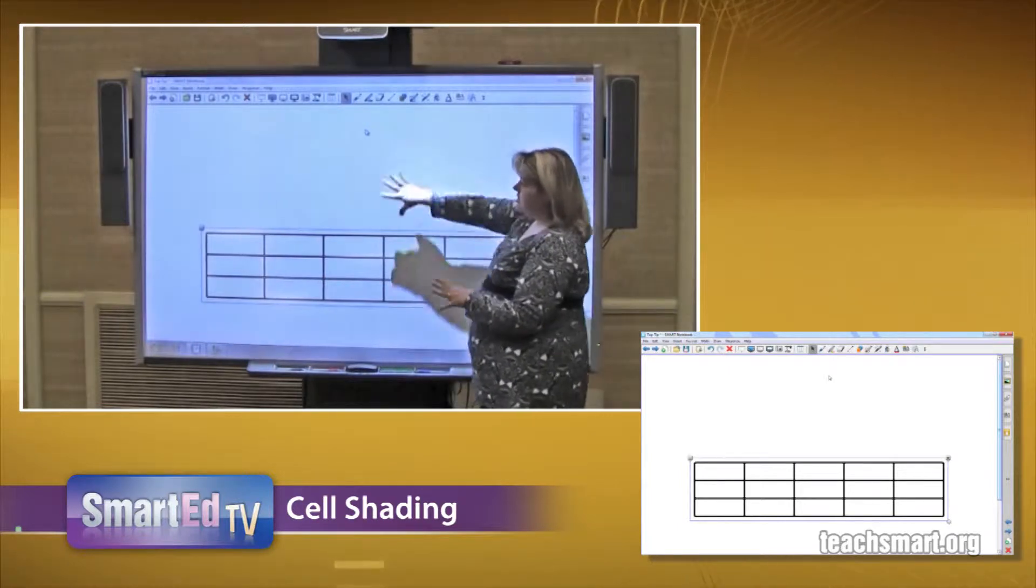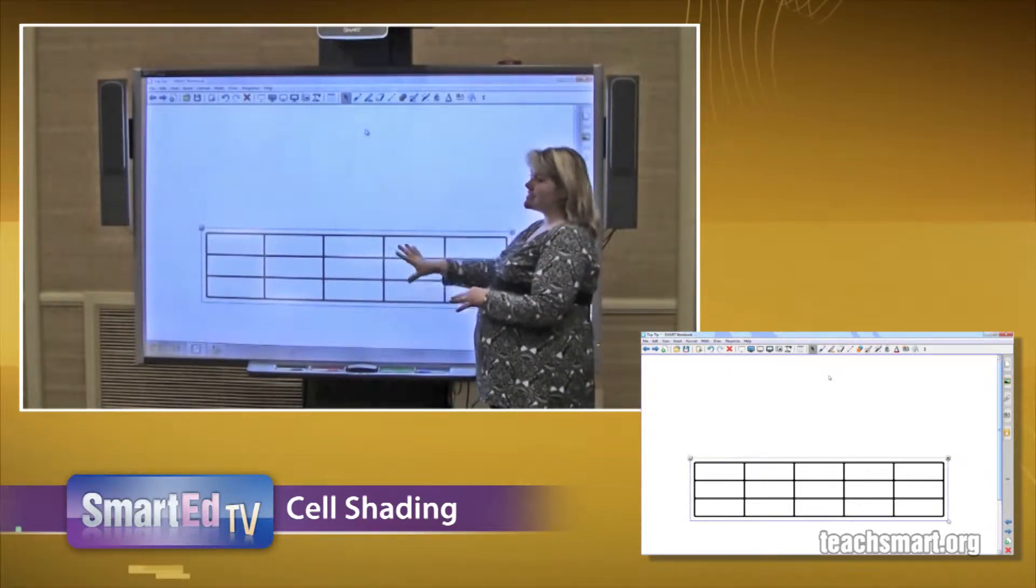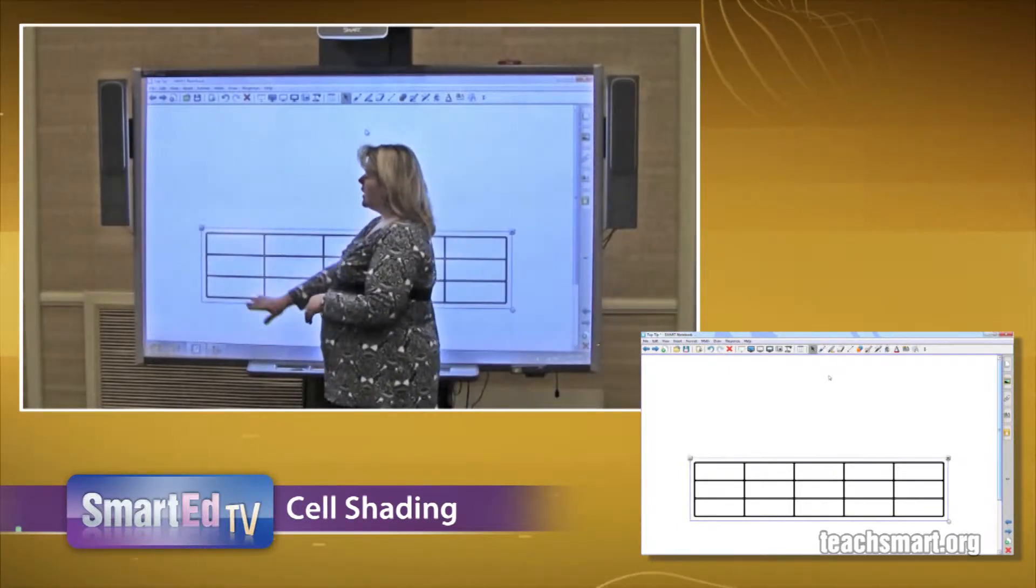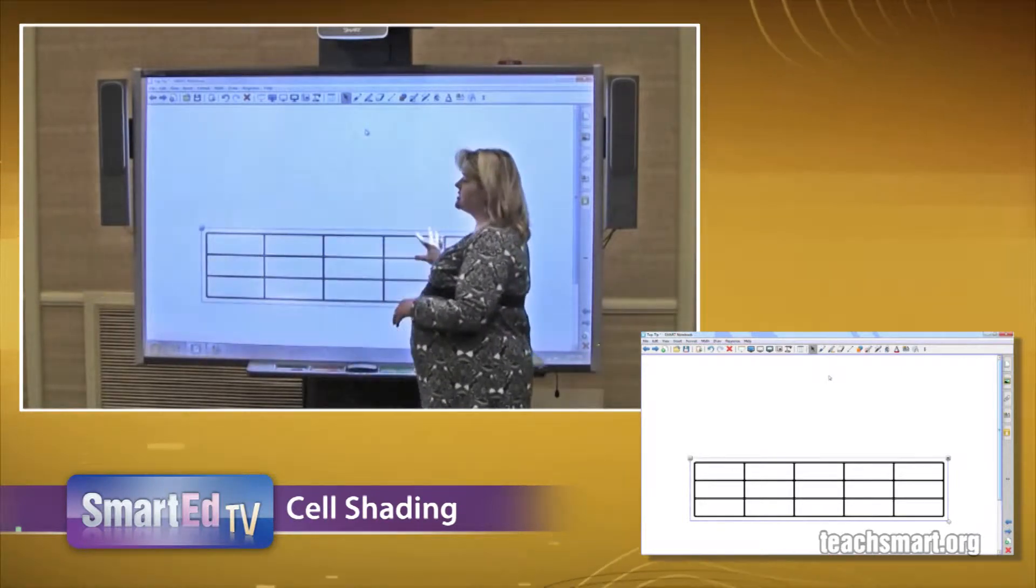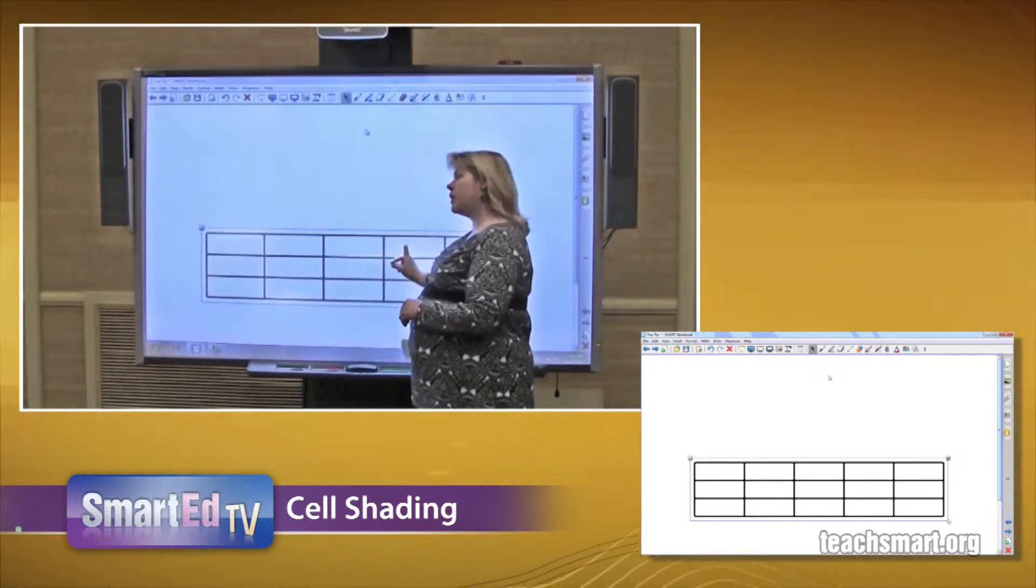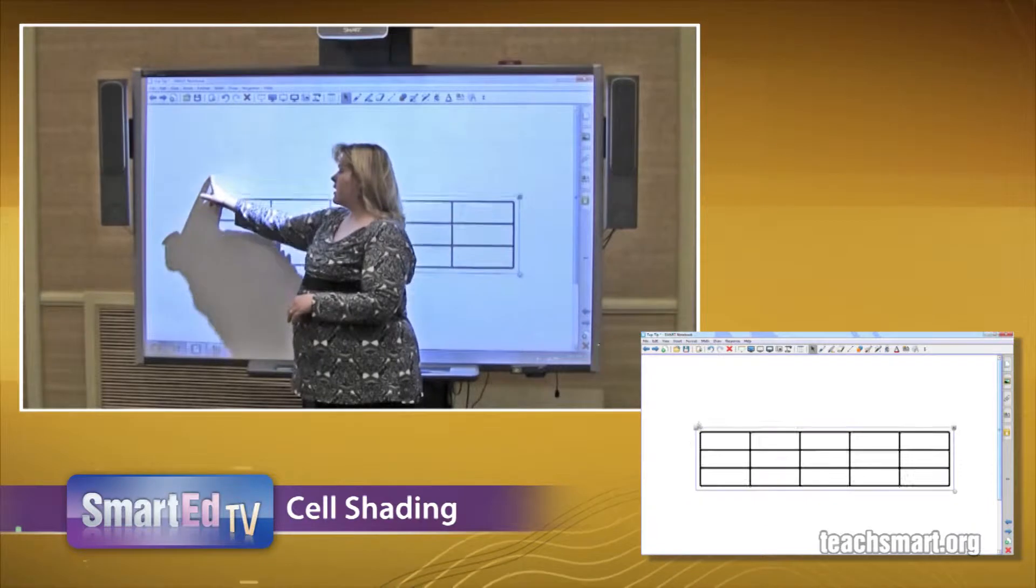Now I want to move my table up into my notebook work area because it's a little low. So because my table is selected, I will choose the gray square in the upper left hand corner and pull it up.